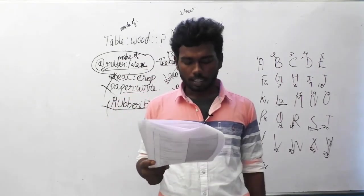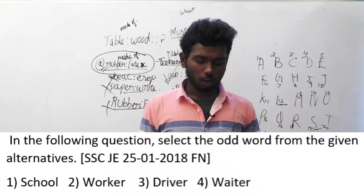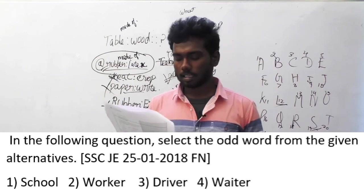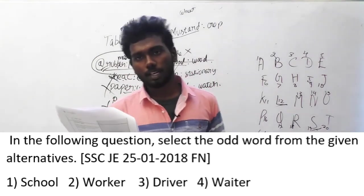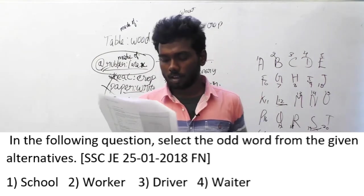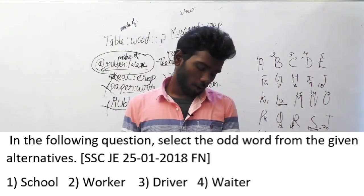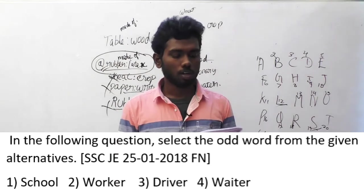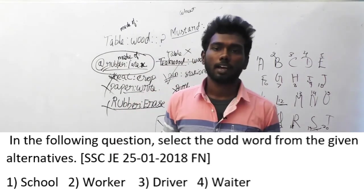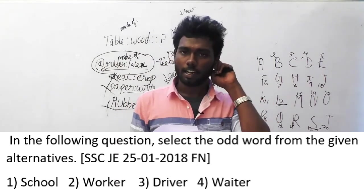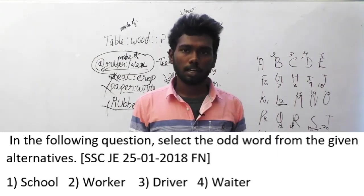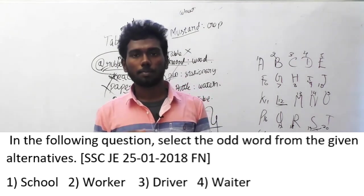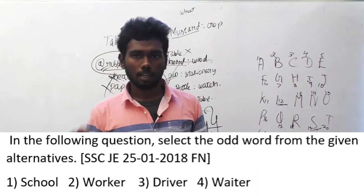Let us move on to question 138. In the following question, select the odd word from the given alternatives. This question is asked in SSC JE, 25th January 2018, forenoon session. The options are option 1: school, option 2: worker, option 3: driver, option 4: waiter. The second, third, and fourth options denote a person and their job — worker, driver, waiter. But option 1, school, is a building, a non-living thing. So school is the odd option.